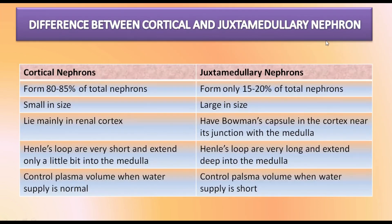The differences between cortical and juxtamedullary nephrons: cortical nephrons constitute about 80 to 85 percent of the total nephrons while juxtamedullary nephrons are only 15 to 20 percent. Cortical nephrons are smaller and juxtamedullary nephrons are larger in size. Cortical nephrons are positioned mainly in the renal cortex, while in juxtamedullary nephrons the Bowman's capsule is present in the cortex near the junction with the medulla. In cortical nephrons the Henle's loop is very short and extends only a little into the medulla, while in juxtamedullary nephrons the Henle's loop is very long and extends deep into the medulla. Cortical nephrons mainly control plasma volume when water supply is normal, while juxtamedullary nephrons control plasma volume when water supply is short.